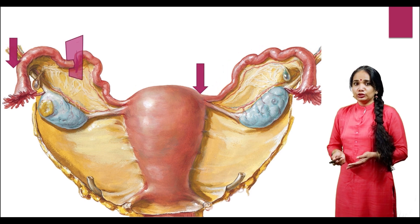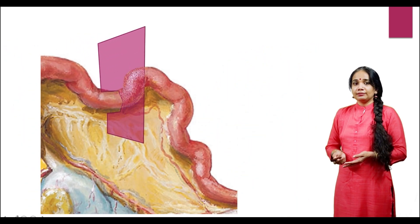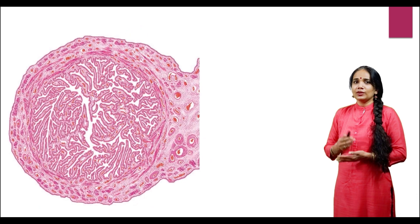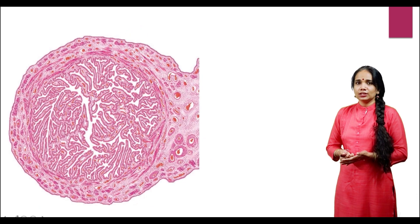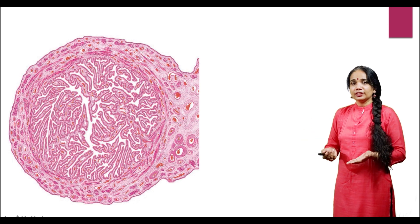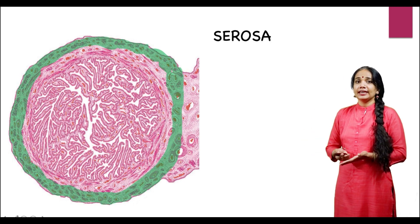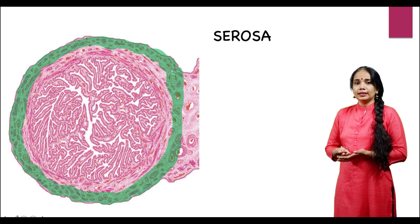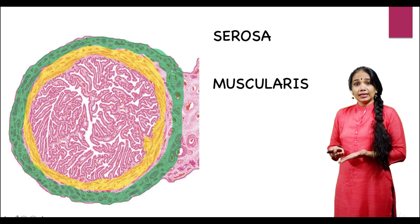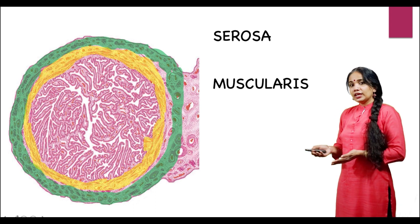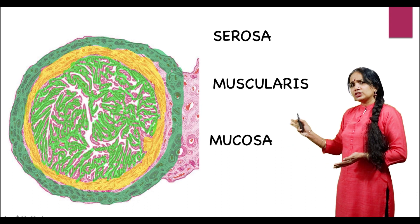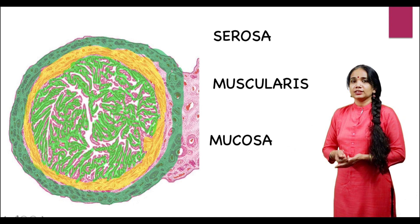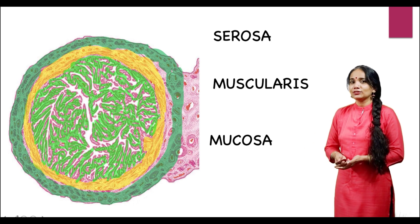When we take a section of the fallopian tube, we can see it is made up of basically three layers. From outside to inside: the first layer is called the serosa, the outermost layer; inside that we have the muscularis; and the innermost layer, which is very characteristic of the fallopian tube, is called the mucosa — and it is highly folded.